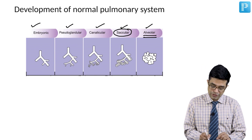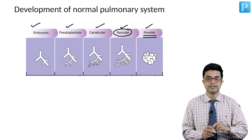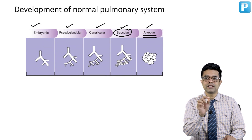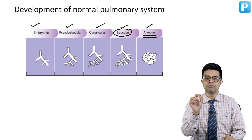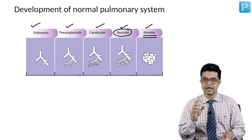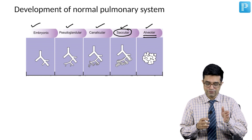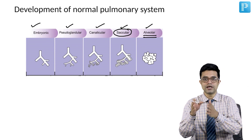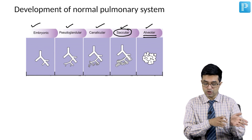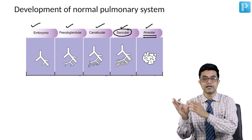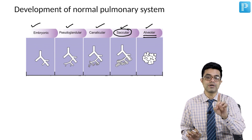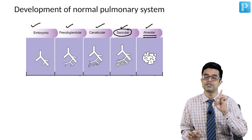How can MCQs in superspeciality be asked? They will give you a question like: identify the correct sequence of pulmonary development in fetus and newborn, with four options having variations in the sequence — such as embryonic, pseudoglandular, canalicular, saccular, or embryonic, canalicular, saccular, alveolar. So the sequence is something you should remember.